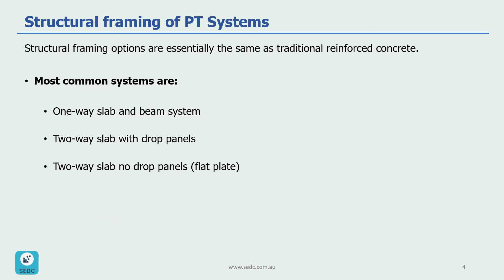Now let's look at structural framing of PT systems. Usually we have the same structural framing options as we have for traditional reinforced concrete. The most common system is one-way slab and beam, which is generally the most economical option with the least overall concrete volume and the lowest PT and reinforcement rate. They also have the largest overall structural depth as a result of beam depths.